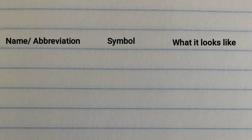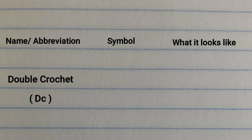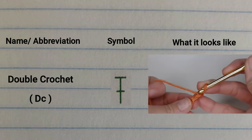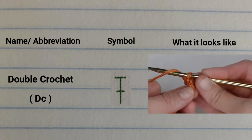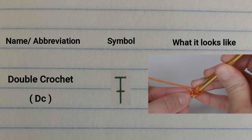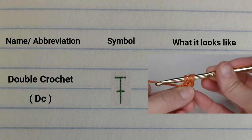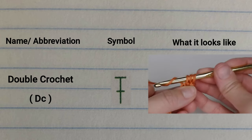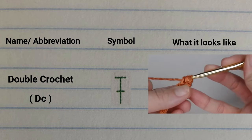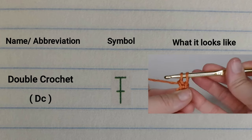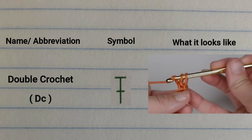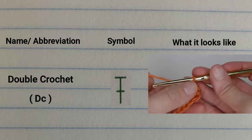The last stitch we're going to go over in this video is a double crochet stitch. Here is the abbreviation, here is the symbol, and here is what a double crochet actually looks like. In the second chain from your crochet hook, you're going to yarn over, insert your crochet hook into that chain, yarn over, pull through — you'll have three loops on your crochet hook. Yarn over, pull through only the first two. You'll have two loops left on your hook, yarn over, pull through the last two. That is a double crochet.